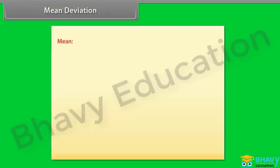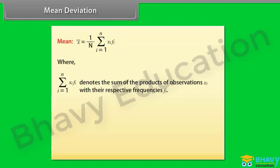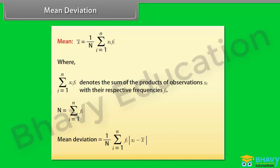Mean deviation about mean. First we find the mean as: x-bar equals summation from i=1 to N of xi·fi divided by N, where summation of xi·fi denotes the sum of products of observations xi with their respective frequencies fi, and N equals summation of fi. Then we find the deviations of xi from the mean, take their absolute values, and find the mean deviation as summation of fi·|xi minus x-bar| divided by N.